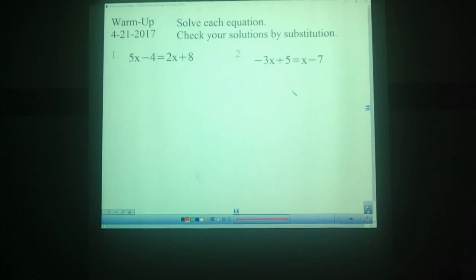I want to go over problem number two with you guys. Add 3x to both sides gives us 5 equals 4x minus 7. I had a lot of kids do negative x plus 3x and got 3x. Remember that the x by itself is like a 1x. 1x plus 3x equals 4x.